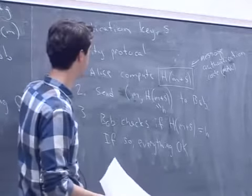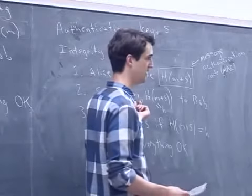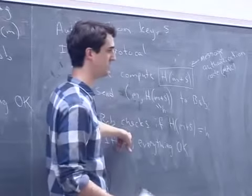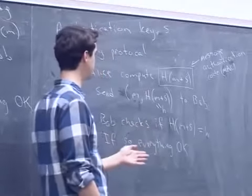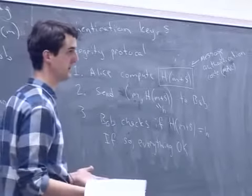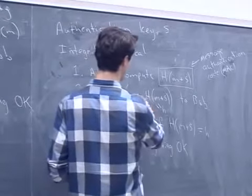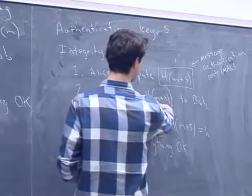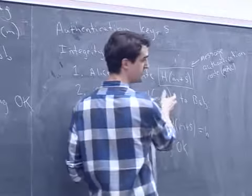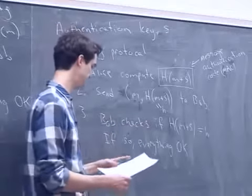MAC is pretty cool because it doesn't require encryption. You could still tamper with m for a denial-of-service attack, but if you can do that you could also just drop packets — even encryption wouldn't prevent that. As long as we're not worried about m being read, MAC provides the integrity we want: no one has access to s except Alice and Bob, and s is required to check integrity.